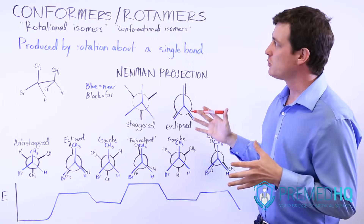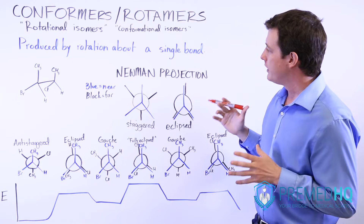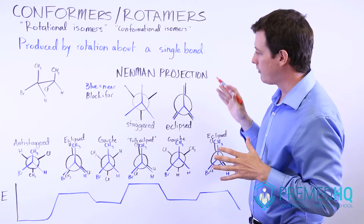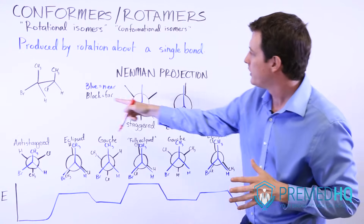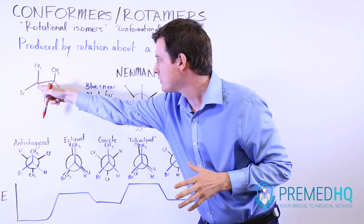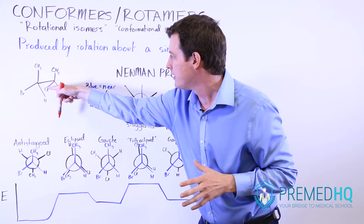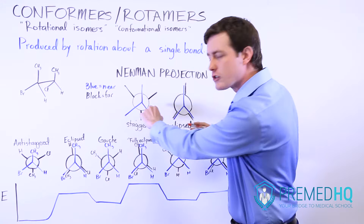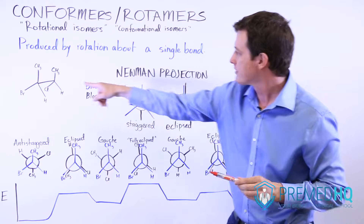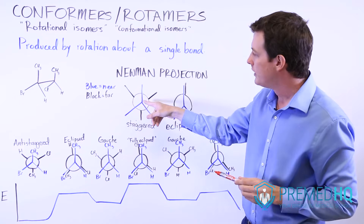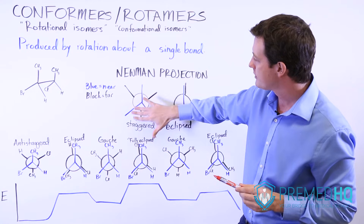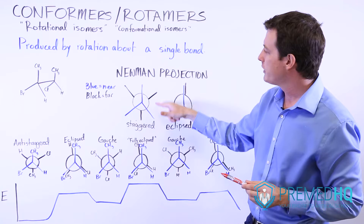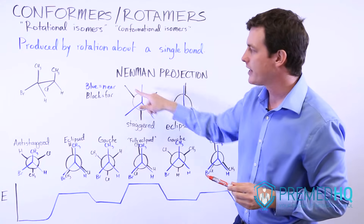The way that we visualize conformers or rotamers is by setting up a Newman projection. The Newman projection is just a way of visualizing an interaction. Here we have a compound with three substituents on this carbon and three substituents on this carbon over here. The Newman projection essentially makes it look as though we're staring straight down this carbon-carbon bond. The three groups in the front are represented by a triangular-like formation, and the three ones in the back have a circle and are attached to it.